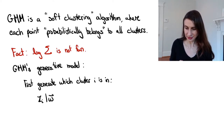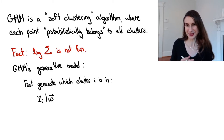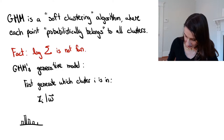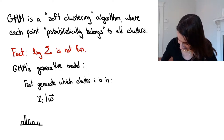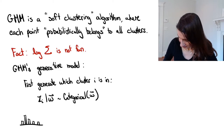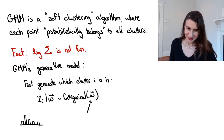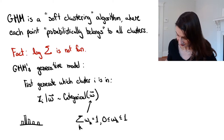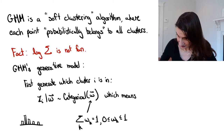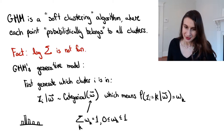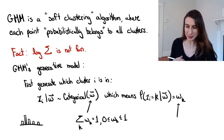z_i is the cluster indicator — it's a value from 1 through k that tells you which cluster we're going to generate point i from. w are the mixture weights, and those represent the popularity of each of the clusters. The mixture weights w can be thought of as a discrete probability distribution over the different clusters, determining how popular each cluster is. All the weights sum to 1 and they're all non-negative. So w_k is the probability that point i is in cluster k.